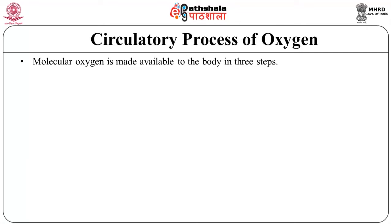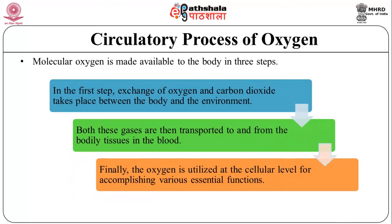Molecular oxygen is made available to the body in three steps. First, exchange of oxygen and carbon dioxide takes place between the body and the environment, or between the lungs and the environment. Second, both these gases are then transported to and from the body tissues through the blood. Finally, oxygen is utilized at the cellular level for accomplishing various essential functions.